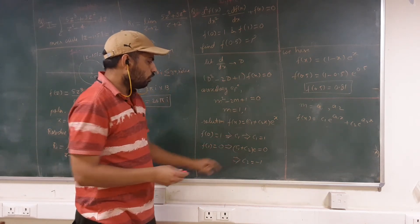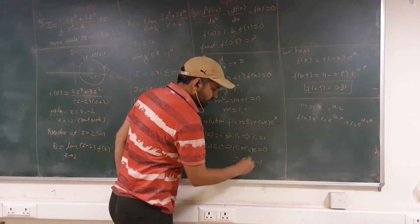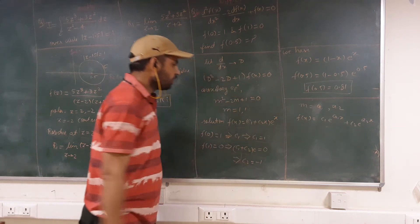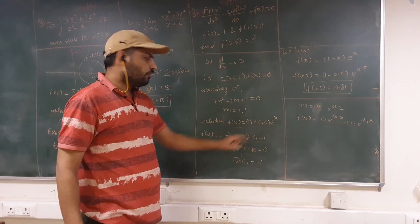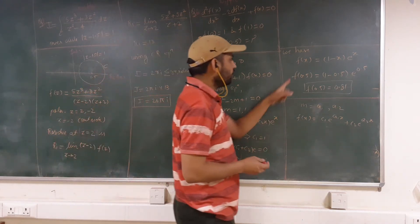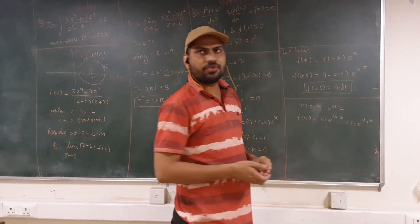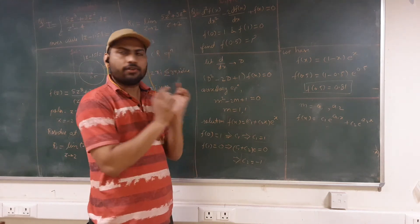So all the constants c₁ and c₂ are now known to us. We can simply put these values in the function equation. So we will have the function f(x) as (1 - x)e^x. So this is our final answer.